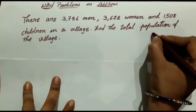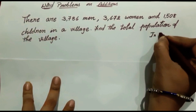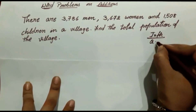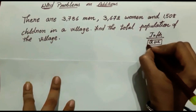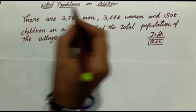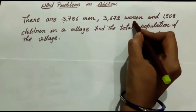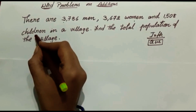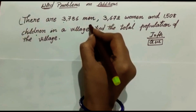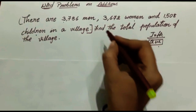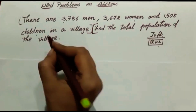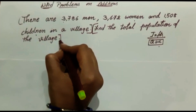Every time we have to find the information given in the question, and the second one is what we have to find — that is the question. So here, the information given is: number of men, number of women, and the number of children. The question is: find the total population of the village.